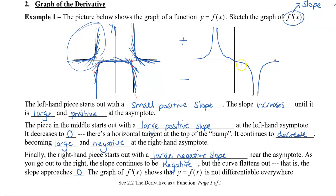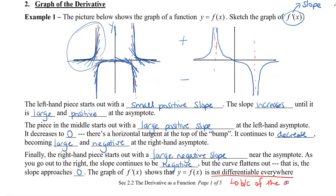The graph of f prime of x shows that f of x is not differentiable everywhere because of the asymptotes. You can see there are still asymptotes in the derivative graph. In the original graph you had to lift your pen to draw it, so there were asymptotes — meaning there was no derivative at the asymptote. So f is not differentiable everywhere because of the asymptotes.